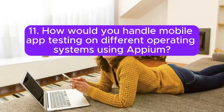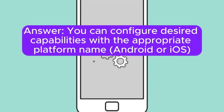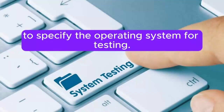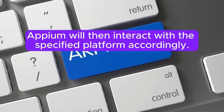11. How would you handle mobile app testing on different operating systems using Appium? You can configure desired capabilities with the appropriate platform name, Android or iOS, to specify the operating system for testing. Appium will then interact with the specified platform accordingly.